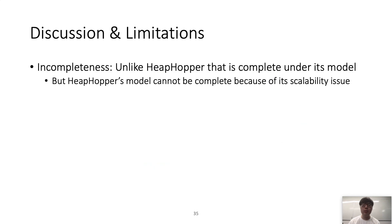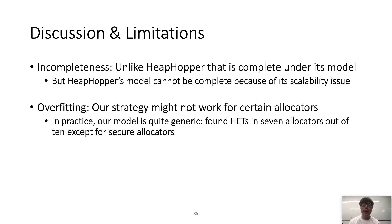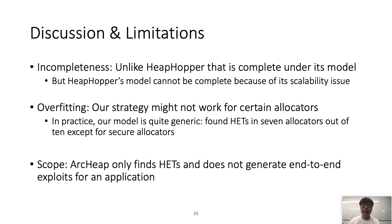Rkip's solution is not perfect. First, it is incomplete — unlike HeapHopper, which is complete under its model, but HeapHopper's model cannot scale. Second, it can have an overfitting issue: our strategy might not work for certain allocators. However, in practice, Rkip's model is quite generic and discovers heap exploitation techniques across different allocators. Finally, Rkip only focuses on finding heap exploitation techniques and does not generate end-to-end exploits like existing automatic exploit generation tools.